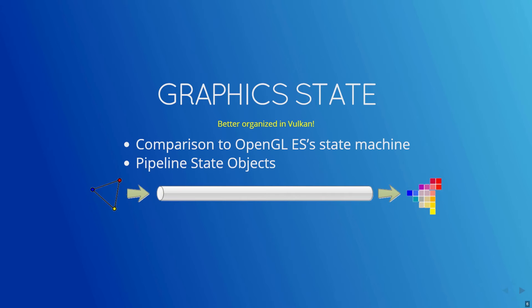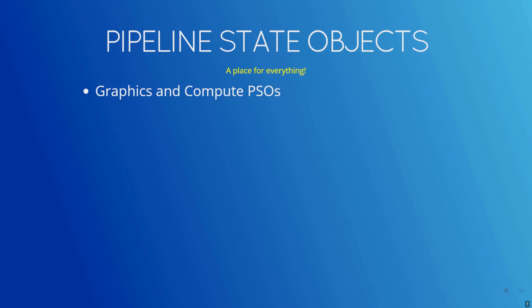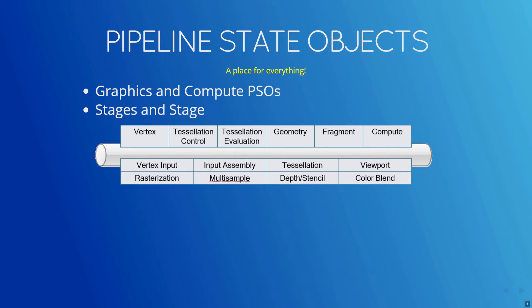Pipelines, also called pipeline state objects, are containers for all the information needed to render your geometry. There are two flavors of pipelines: graphics and compute. Pipelines define the stages — the vertex, fragment, tessellation control and evaluation, and geometry stages — and the compiled shaders that will be used for those stages.